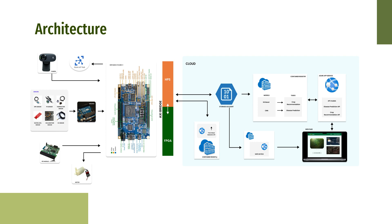We have deployed an XGBoost model for crop recommendation and a CNN model for disease prediction as APIs using Azure Containers and App Service. Farmers will interact with these APIs through a website, and the expected results — like recommended crop, disease cure, and control measures — are displayed to the farmer on the website.